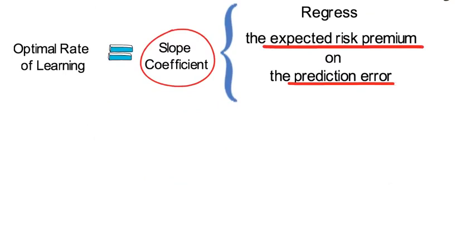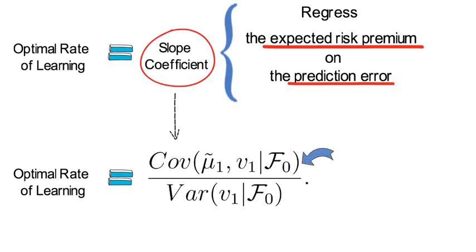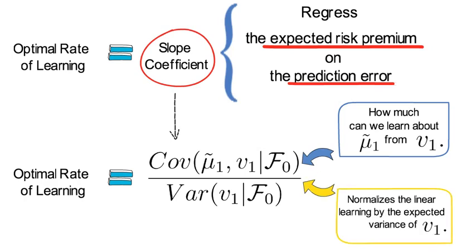So in summary Kalman derives that the optimal learning rate equals the following ratio. Now the numerator tells us how much can we expect to learn about μ̃_1 from observing v_1, or in more word expressions, how much can we learn about the ex-ante risk premium between 0 and 1 by observing the measurement error in 1? Now the denominator normalizes the linear learning by the expected variance of v_1.